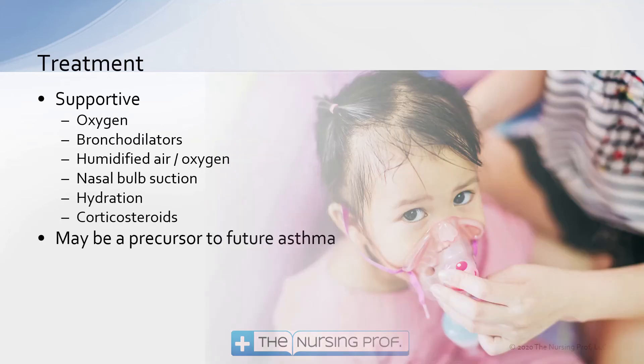Treatment-wise, bronchodilators are one of our main treatments — opening up those small airways to help move secretions, keeping in mind that the small airways are restricted to some extent due to bronchoconstriction. Humidified air and oxygen may also be helpful: humidification helps loosen secretions, and oxygen supports oxygenation.